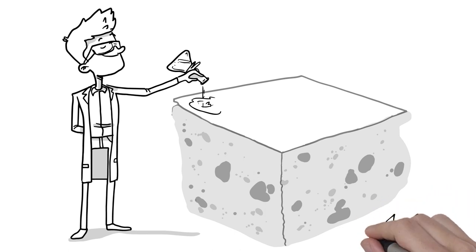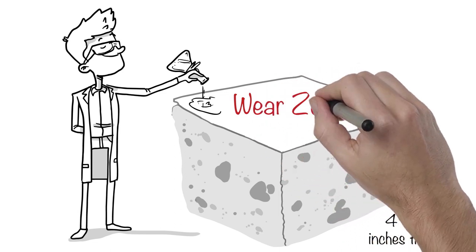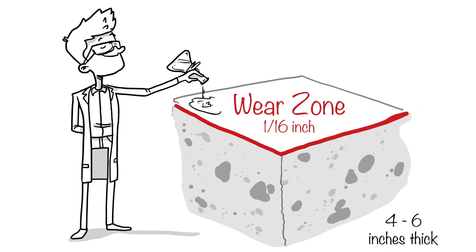Now, a concrete slab is usually four to six inches thick, but all the wear and tear happens in the top 16th inch wear zone of the concrete. That's where the concrete is most vulnerable, so most hardeners target all their power there.